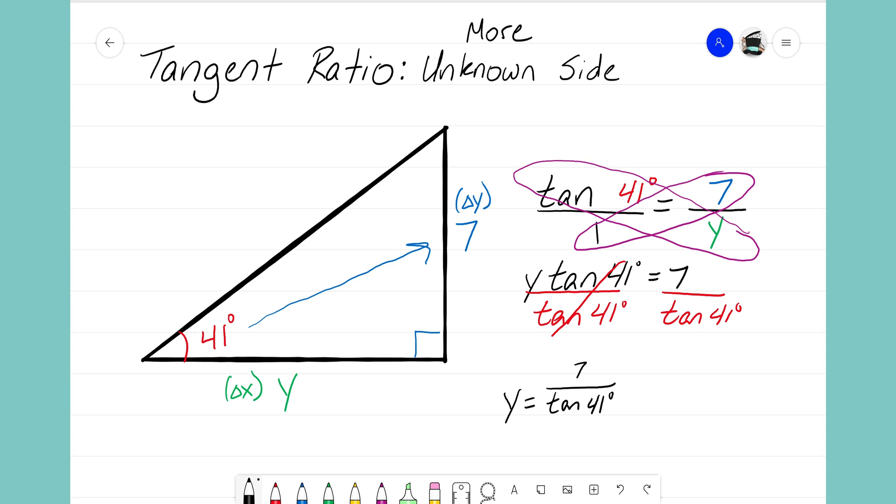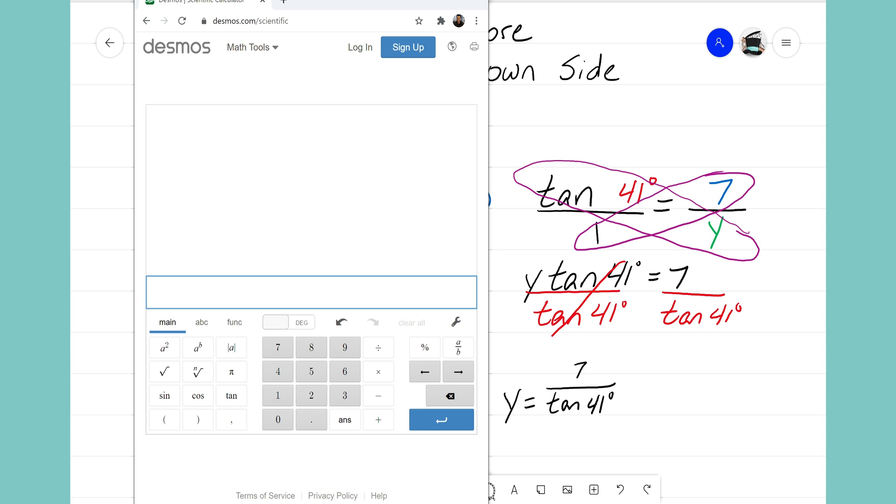Now is the point where we want to get our calculator, enter this expression in, and see what the value of that missing side is. So let's go ahead. With my graphing calculator here from Desmos, I can go ahead and enter the expression in of 7 divided by tangent of 41 degrees. So double check that your calculator is in degree mode and not radian mode.